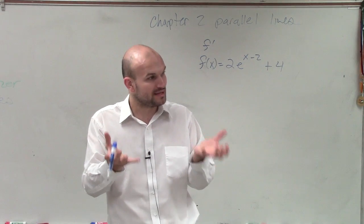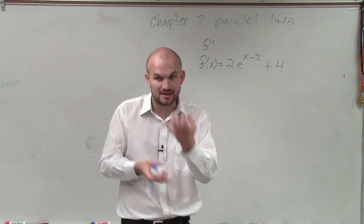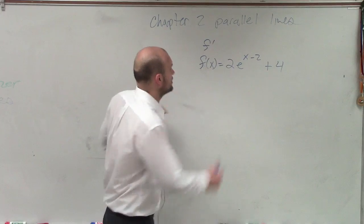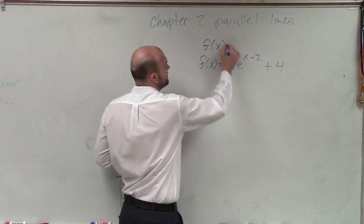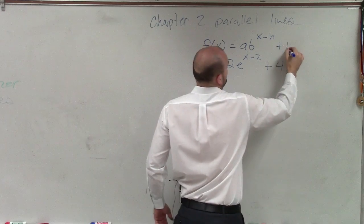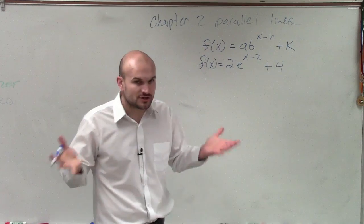And we use that formula, p times e raised to the rt, where e is your constant representing your continuous interest. So here, we just need to know, remember, it's f of x equals a times b to the x minus h plus k. This is all of our transformations.